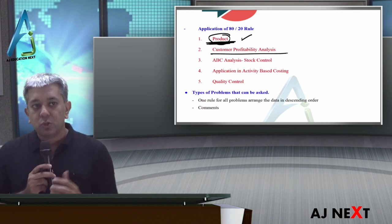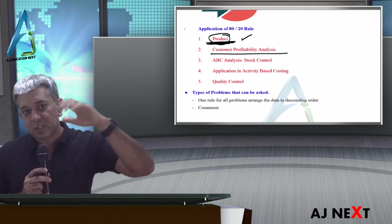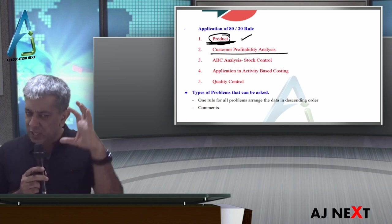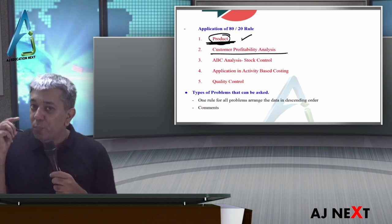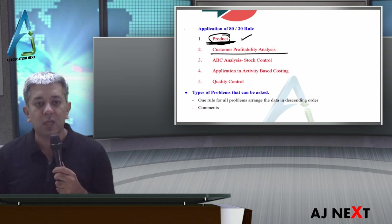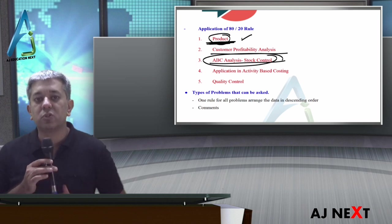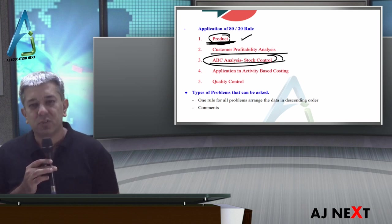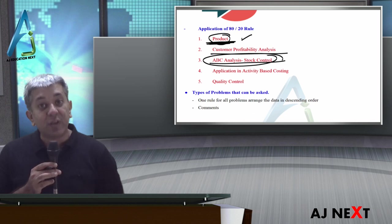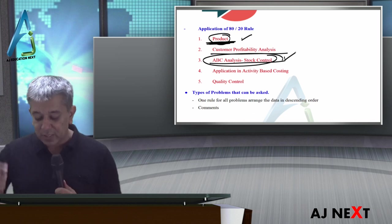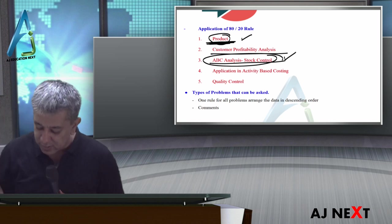Their control - the top 80% customers in terms of revenue are very few in number, but they give very high business. Companies give them a lot of services that they don't give to regular customers. Third, 80% of the value of all stocks is only held by 20% of the stocks. These stocks are very valuable, so control them properly. This was in CA Inter also as ABC system.